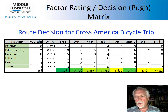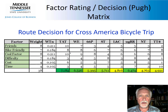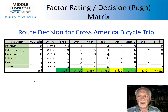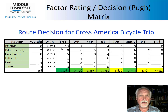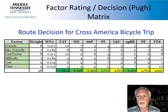You choose your weights, normalize them, and then rate each alternative for each factor on some scale — it could be 1 to 100, 1 to 20, 1 to 10, or 1 to 5. I chose a 1 to 10 scale. Then you simply add up the weighted scores.